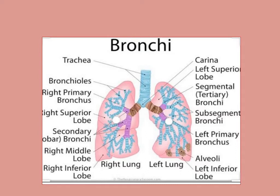What is the trachea? It is a pipe-like structure. It is a cartilage ring type — it consists of cartilage ring structures. Now, the trachea is divided into two parts.